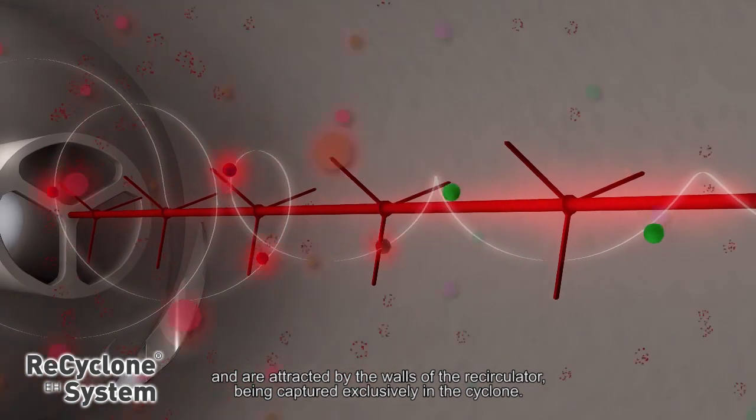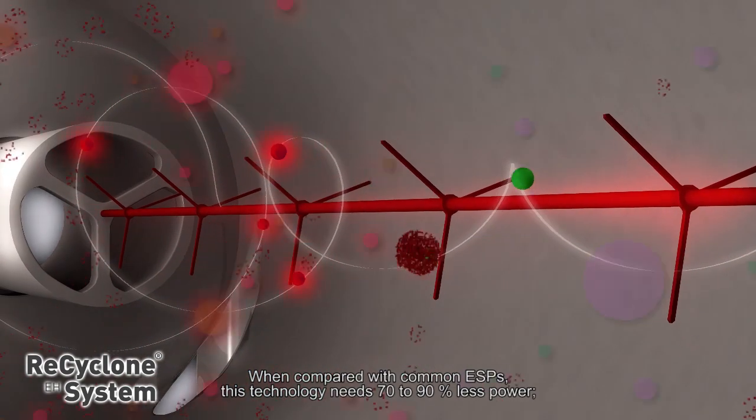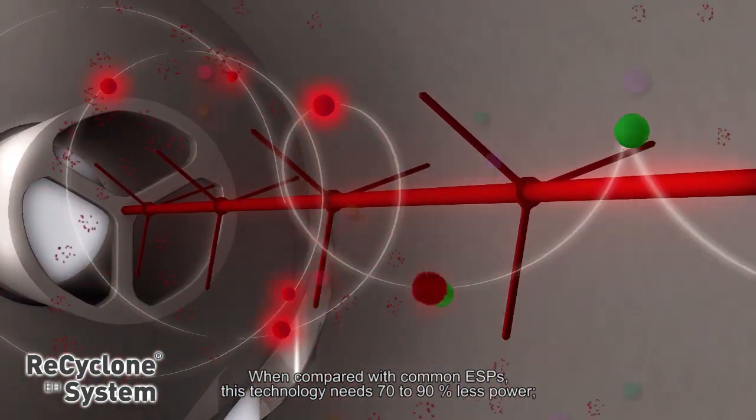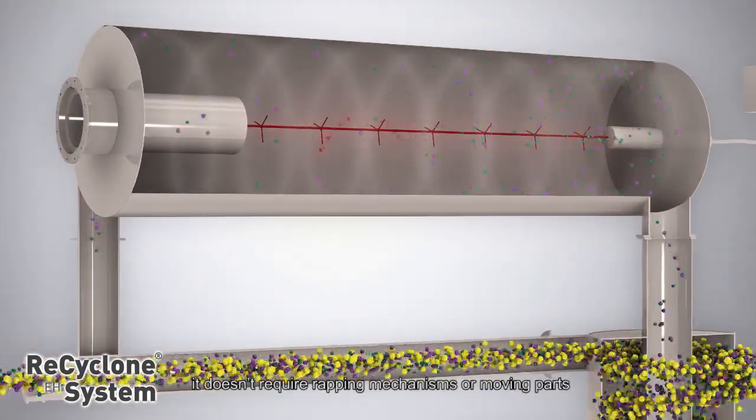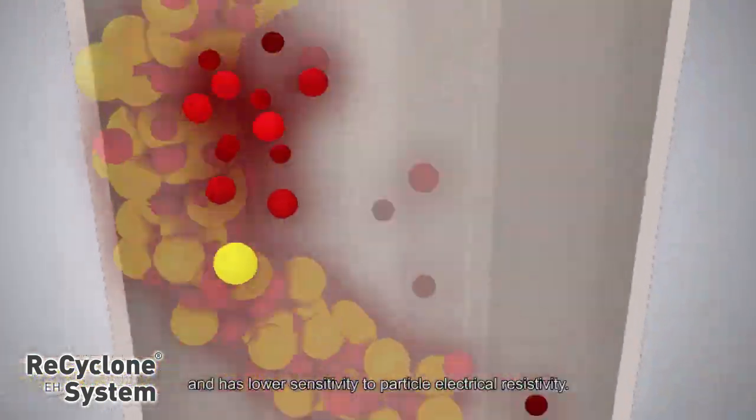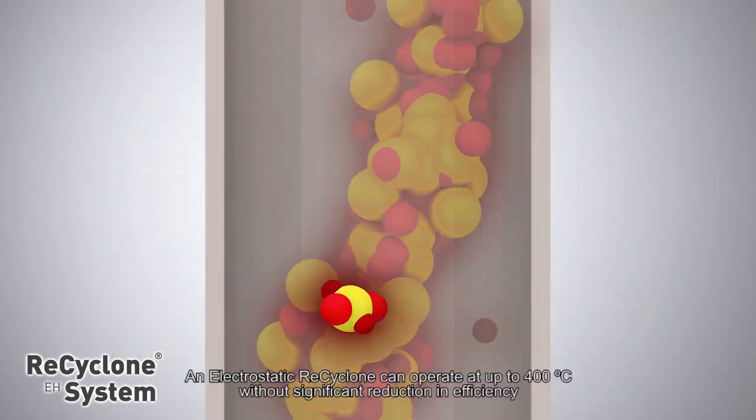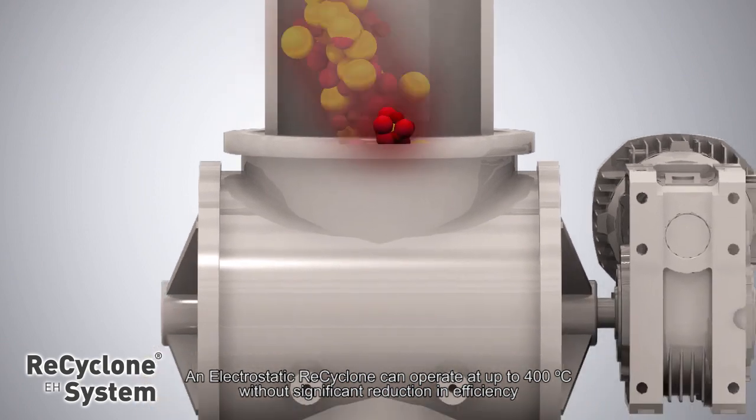When compared with common ESPs, this technology needs 70 to 90% less power. It doesn't require wrapping mechanisms or moving parts and has lower sensitivity to particle electrical resistivity. An electrostatic recyclone can operate at up to 400 degrees Celsius without significant reduction in efficiency.